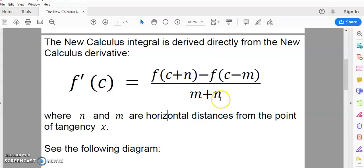And now in the New Calculus, the area or integral is derived directly from that formula. So there is no need for the absolute nonsense of infinite sums and all sorts of other rot that you find in mainstream calculus. And so n and m are horizontal distances from the point of tangency x, or in this case, c.